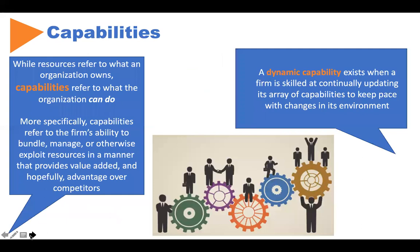Capabilities are what we can do — resources are things we have and capabilities are the things that we can do. Capabilities are our abilities to bundle, manage, or otherwise use our resources in a manner that provides value. For example, in a manufacturing organization producing automobiles — whether that is Tesla, Ford, or Toyota — you need certain metals and rubber; those are resources. You can purchase rubber and metal, but it is what you do with those that is going to make a difference. Ford has a different workforce than Toyota, which has a different workforce than Tesla. We are using our resources differently, and those capabilities can make or break the business.